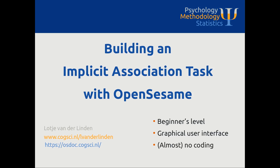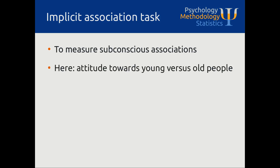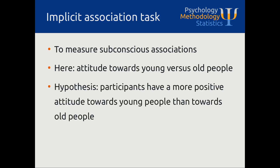A bit about the implicit association task that we are going to build. This task is used to measure subconscious associations between concepts and evaluations. In this example we are going to measure the associations between young and old and good and bad, and by doing this we can measure implicitly the attitude of participants towards young and old. The prediction is that young participants will have a more positive attitude towards young people than towards old people.